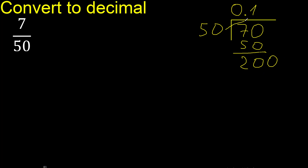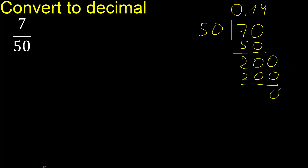50 multiplied by which number gives 200? Multiplied by 4 is 200. Subtract: 200 minus 200 is 0. Therefore, finish. The answer is 0.14. Thank you.